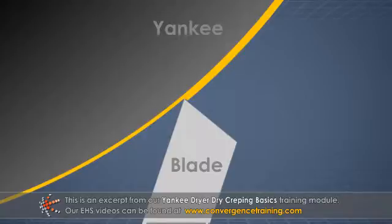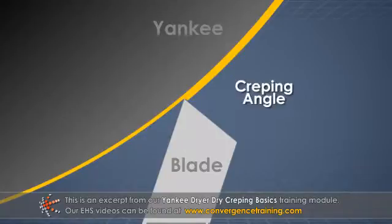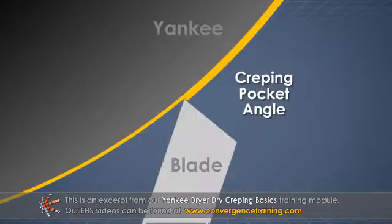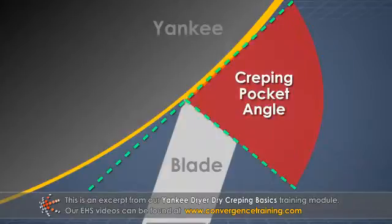The last important angle is the creping angle or pocket angle, which is defined as the angle between the Yankee tangent line and the creping blade surface. The crepe pocket angle is very important in determining the resulting crepe structure in the sheet.